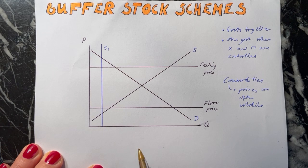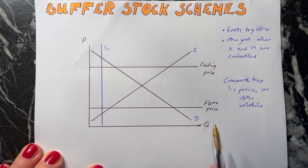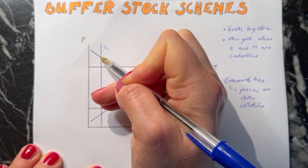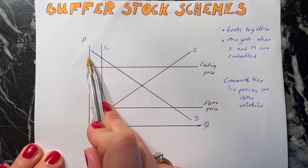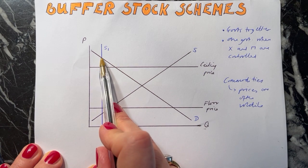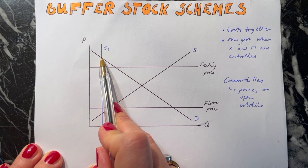Let's imagine there's a very low harvest in one year - we'll call this S1, the supply in that year. If you find the equilibrium price where S1 is equal to the demand, it's up here. This is a problem for the buffer stock scheme because the price, if we read across to the axis, is higher than the ceiling price. This is unacceptable, and therefore the buffer stock scheme will go into action to do something about this.